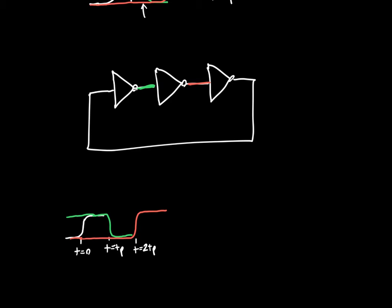And then eventually the signal will propagate back to our original input. So at t equals 3tp, our input, which is now our output, will go from high to low.